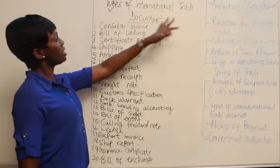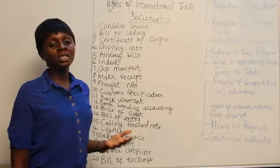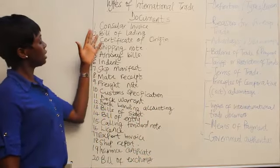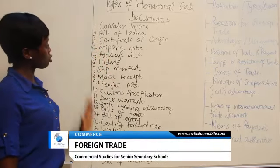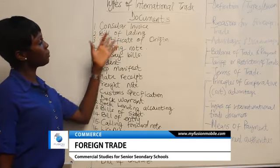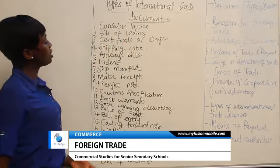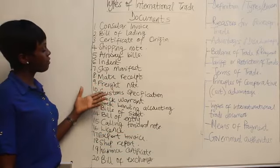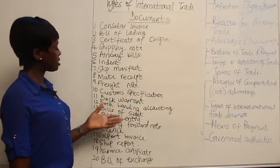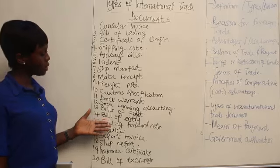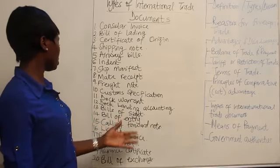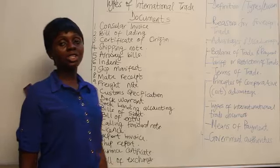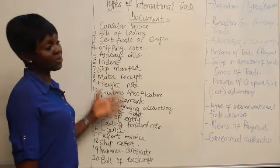Now we're looking at types of international trade documents. These are documents used to facilitate international trade. They include: the consular invoice, bill of lading, certificate of origin, shipping notes, airway bills, indent, ship manifest, mates receipt, flight notes, customs specification, dock warrants, dock lading account, bill of sight, and bill of entry, among others.